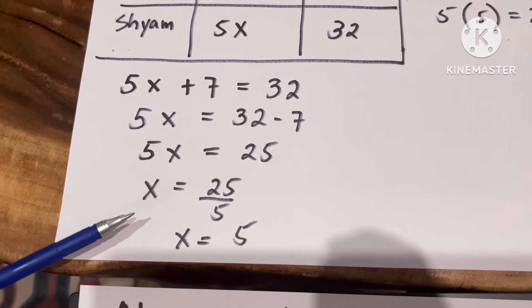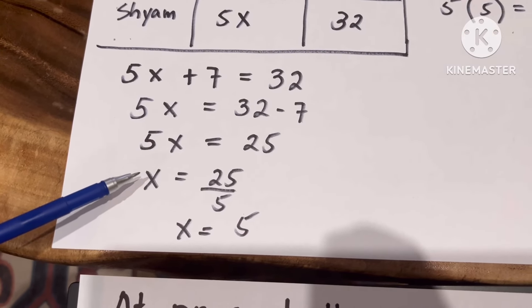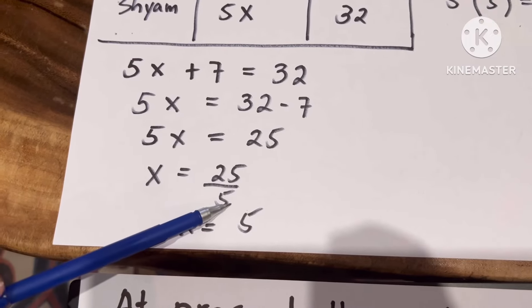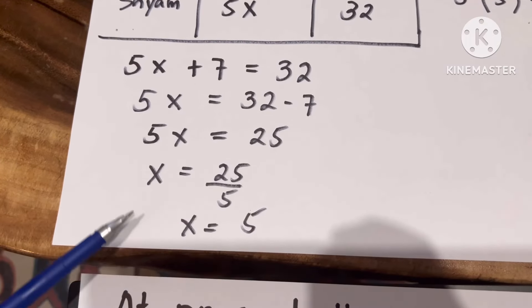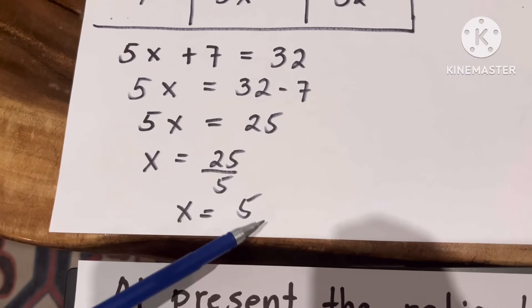But we only want the value of X, so we're going to write X here, and the 5 will become the denominator of 25. So X equals 25 divided by 5, X equals 5.